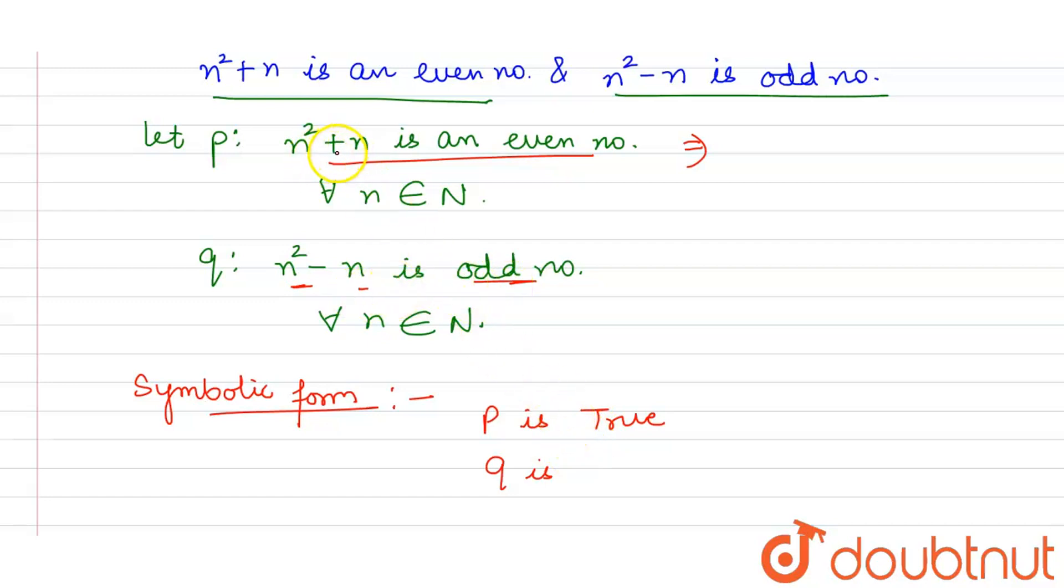Jaise, agar suppose main koi example loon, koi bhi number, n ko main leti hun, 3. To, 9 plus 3, it will be an even number. To, yani ki yeh statement to true hai. Chahe aap even number le len, chahe odd number le len, it will be true. Aur iske example mein yeh ho jayega, is case mein false. To, Q is false.